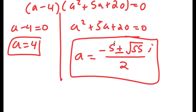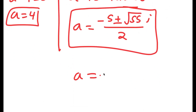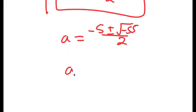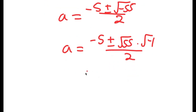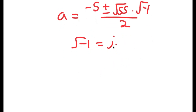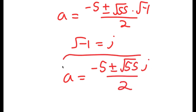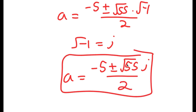What you should get is a equals negative 5 plus or minus the square root of negative 55 over 2. The square root of negative 55 I can rewrite as the square root of 55 times the square root of negative 1. The square root of negative 1 is equal to the imaginary number i. So if I replace the square root of negative 1 with i, I get a is equal to negative 5 plus or minus the square root of 55 times i, all over 2.